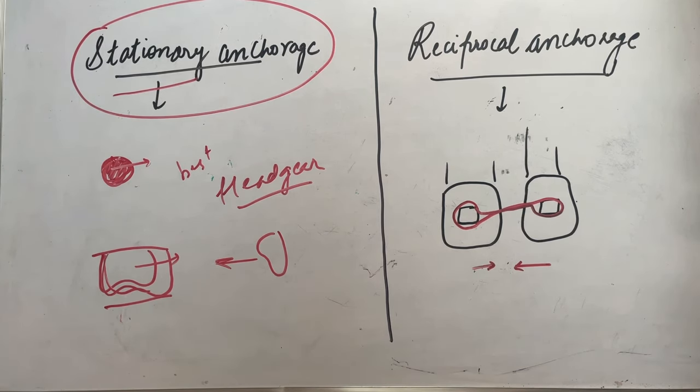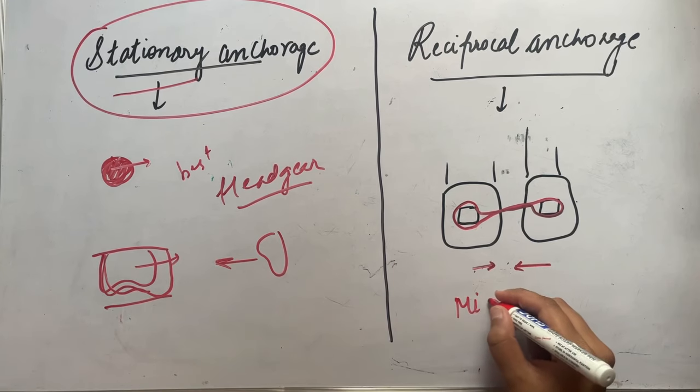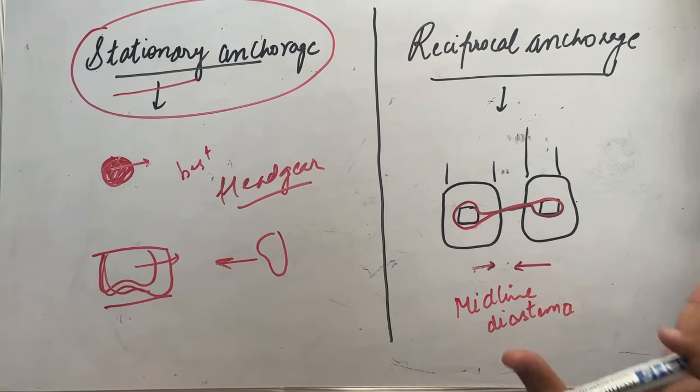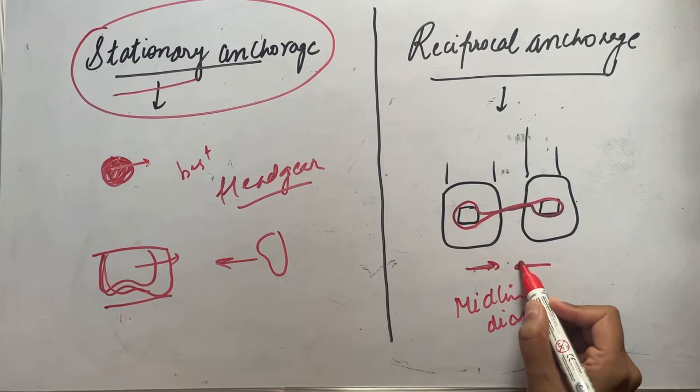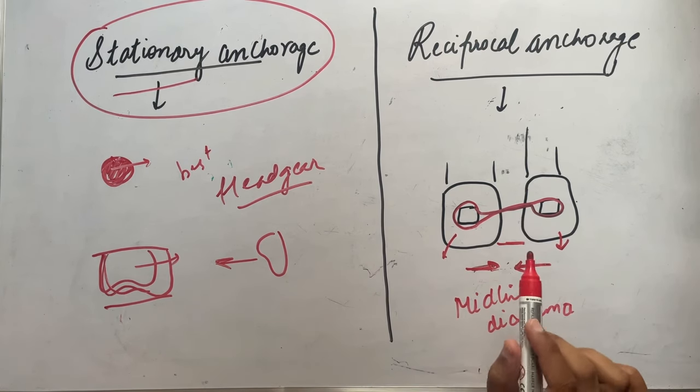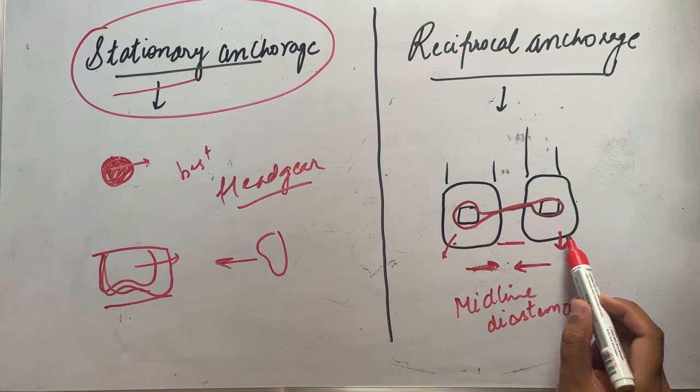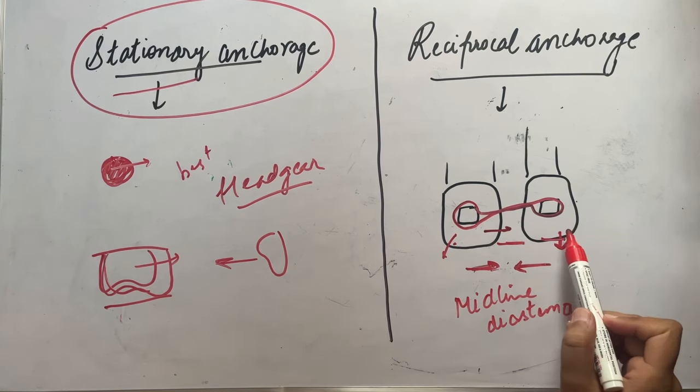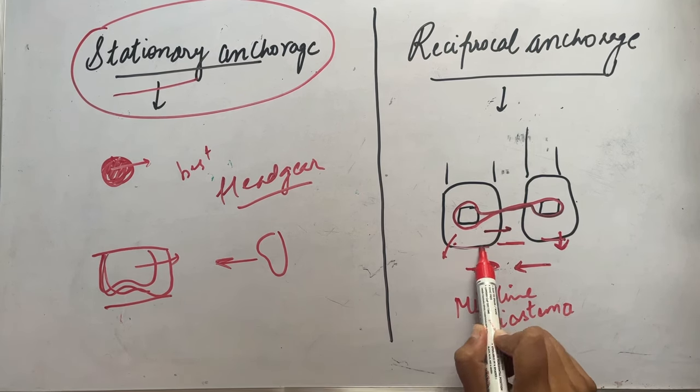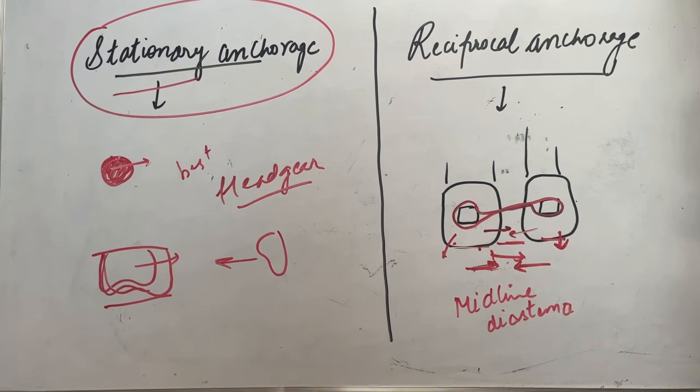Now what is reciprocal anchorage? Reciprocal will be opposite direction, as in cases of midline diastema. We want closure of spaces, we want the central incisors to close the space. Here each central incisor is using anchorage from the other central incisor. This one is getting anchorage from this incisor causing this movement, while this central incisor will use the right central incisor as a reciprocal anchorage to move mesially, hence closing the midline diastema. So this will be our reciprocal anchorage.